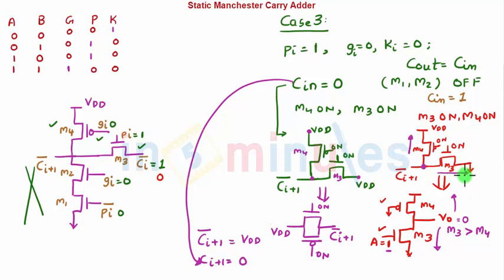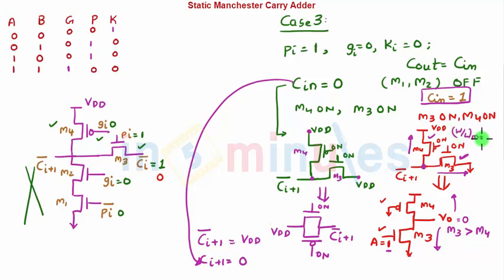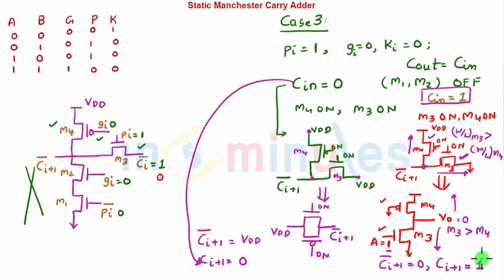To achieve CI-plus-1-bar equal to 0, M3 must be stronger than M4. This is handled by transistor sizing: W/L of M3 must be greater than W/L of M4. When M3 is stronger, it pulls the output toward ground, giving CI-plus-1-bar equals 0, which means CI-plus-1 equals 1. This is exactly what we needed when C-in equals 1.